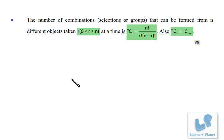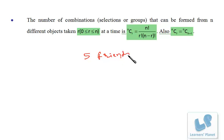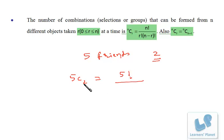Let's understand the formula for combination. In my lectures, I won't be using the term permutation whenever it is required to arrange persons — we will see that when doing problems. No need to use permutation; you can straightforwardly go by combinations. The number of combinations that can be formed from n different objects taken r at a time is nCr, that is n factorial by r factorial into (n minus r) factorial. Suppose you have five friends and you wish to choose two — that is 5C2. So 5C2 is 5 factorial upon 2 factorial into (5 minus 2) factorial.